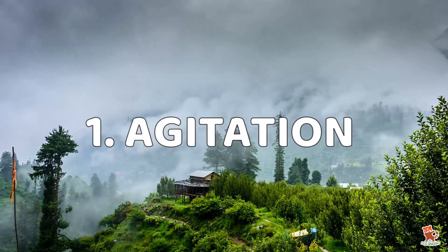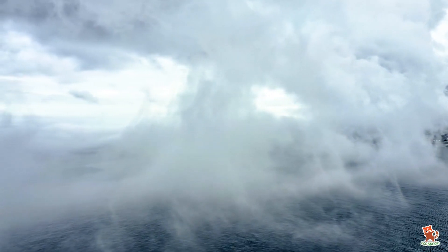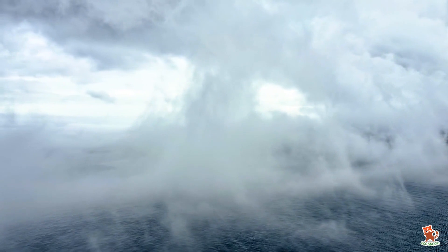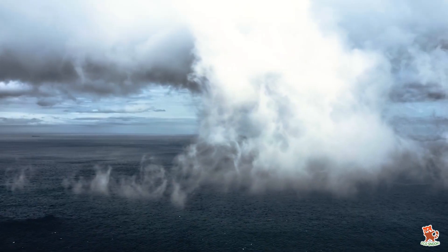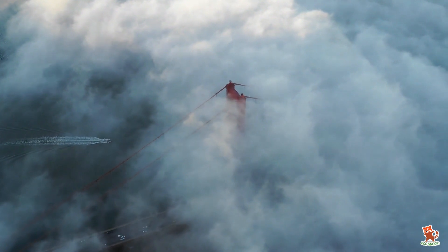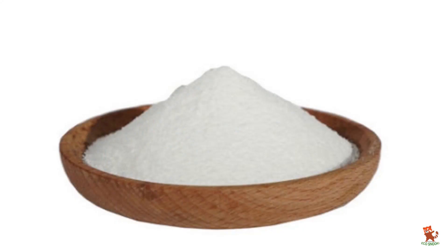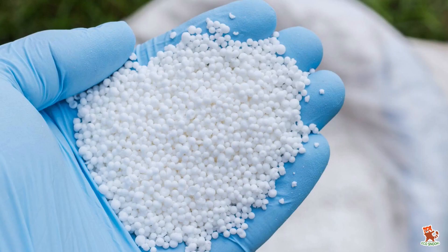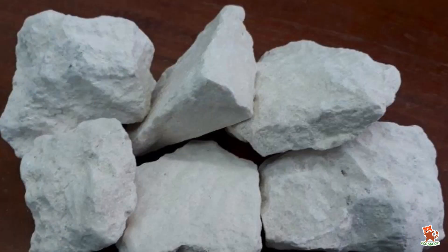First is agitation. This stage includes the use of chemicals to stimulate the air mass upwind of the target area to rise and form clouds. These chemicals absorb the water vapor and help in the process of condensation. Chemicals like calcium oxide, compounds of urea and ammonium nitrate or chloride, and calcium carbonate are used in this stage.